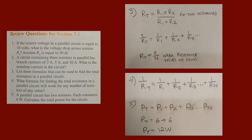Question 4: what formula for finding total resistance works with any number of resistance values or resistors? That would be the reciprocal formula. Question 5: a parallel circuit has two resistors, each consuming 6 watts. Calculate the total power. Using P total equals P1 plus P2, we add 6 plus 6 watts, which equals 12 watts.